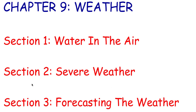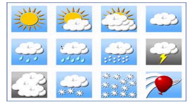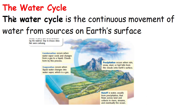The weather. Weather is the condition of the atmosphere at a certain time and place. The condition of the atmosphere is affected by the amount of water in the air. As you see here, there are different kinds of weather — for example, sunny, snowy, rainy, or cloudy.